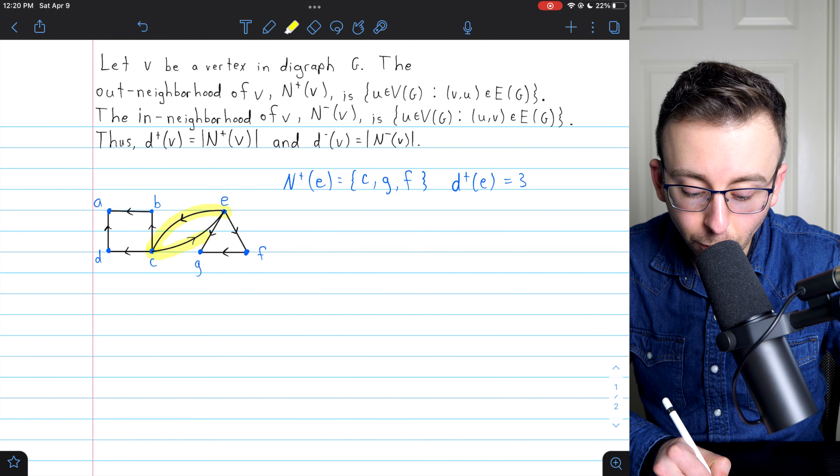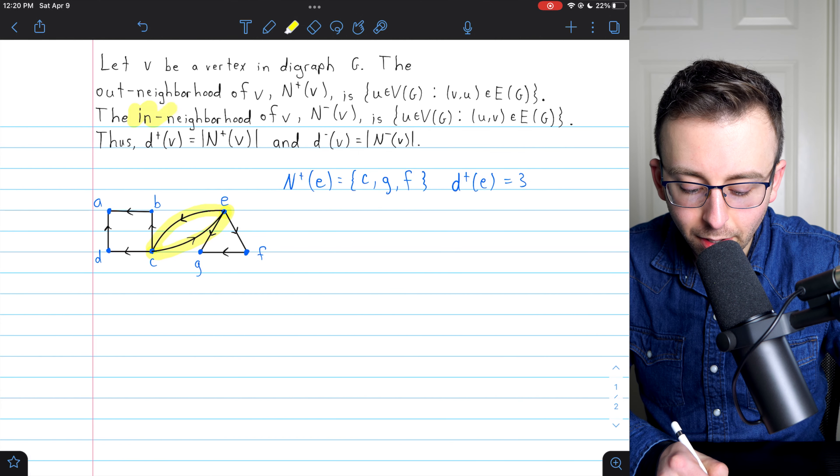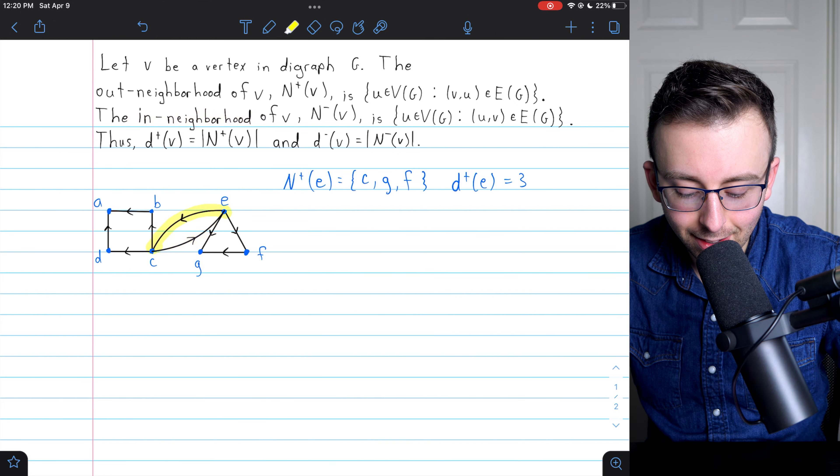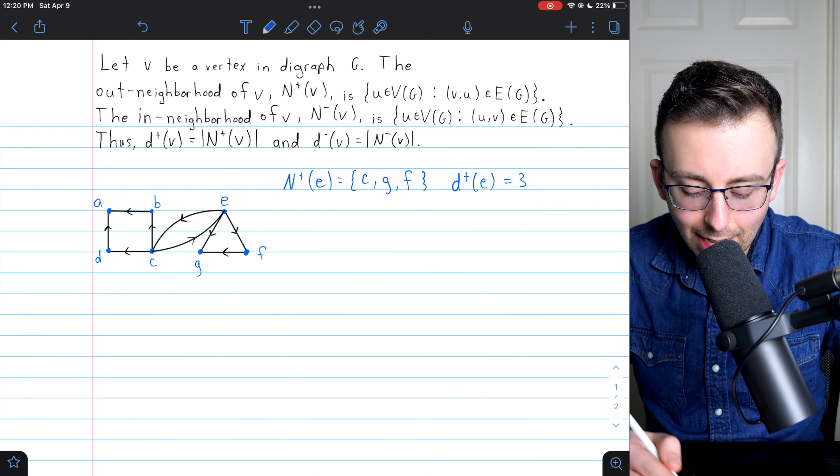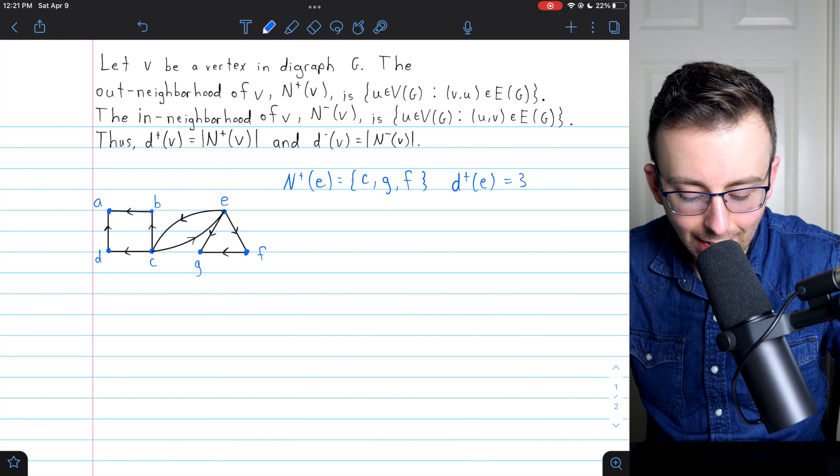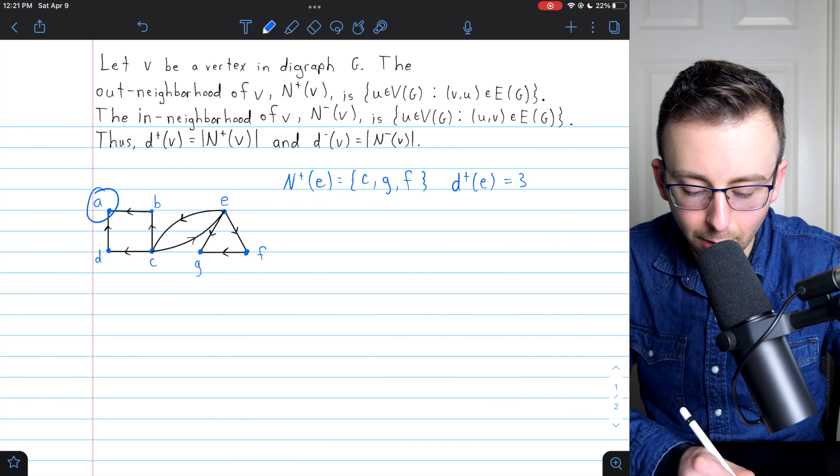So if we wrote the in-neighborhood of E, that also would contain C. But let's write the in-neighborhood of a different vertex. Why don't we go ahead and write the in-neighborhood of A.